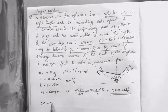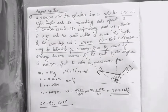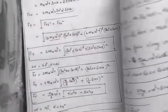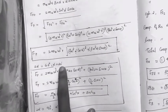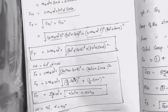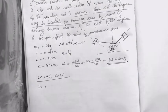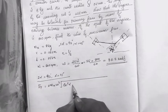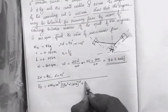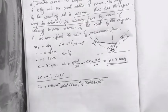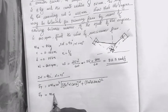Substituting alpha equals 45 degrees, we derive the primary force expression F_p. The general equation is F_p equals 2mR times omega squared, under the root of cos squared alpha cos squared theta plus sin squared alpha sin squared theta. Adding alpha equals 45 degrees, F_p equals mR omega squared into R.